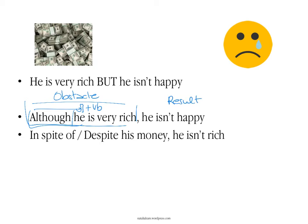In the main clause, what you say is the result. You could also say 'in spite of' or 'despite his money.' So you're somehow summarizing the idea of 'he is very rich' into a noun group. You could say 'in spite of his money' or 'despite his money,' and then the result: he isn't happy. So let's see how you do all of these things and look at some more examples.